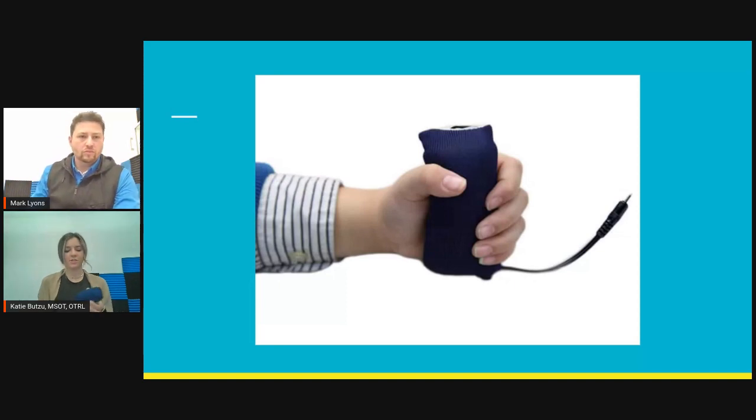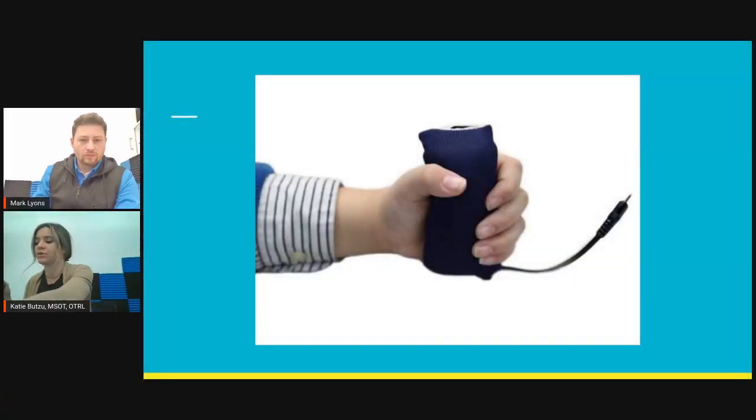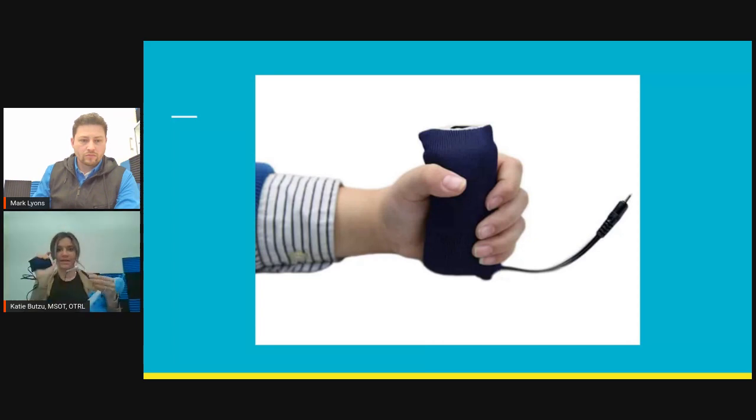Looking at this next switch — this is just a pressure switch, and I also have one here. What this allows is it actually has some strapping and would just be placed in the individual's hand. You can also use this as a head switch, and it can be mounted a variety of different ways. What this allows the user to do is very minimally apply pressure. Then you can see the port — just like I do — and this would get plugged into your switch accessible toy or game, or the power link or any interface system, to activate and turn on the toy.